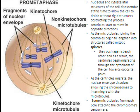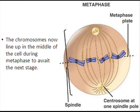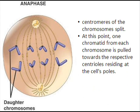Spindle fibers begin to form along with sister chromatids. The nuclear envelope dissolves in prometaphase, and kinetochores become attached to microtubules to move the chromosomes. Each chromosome then lines up along the metaphase plate during metaphase.